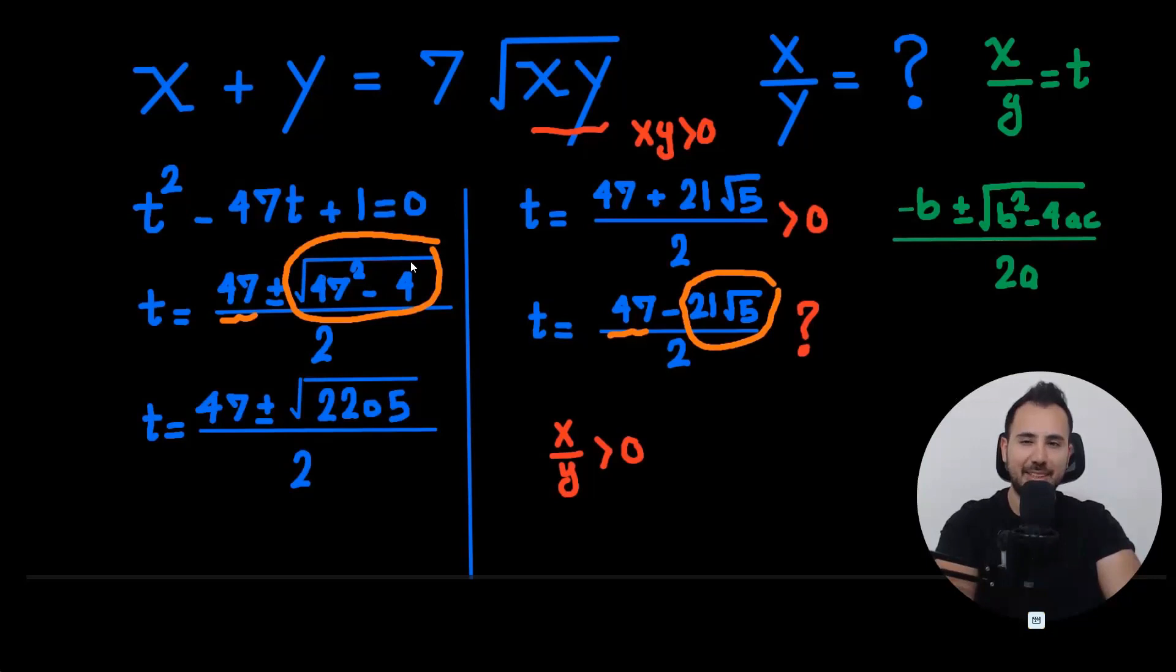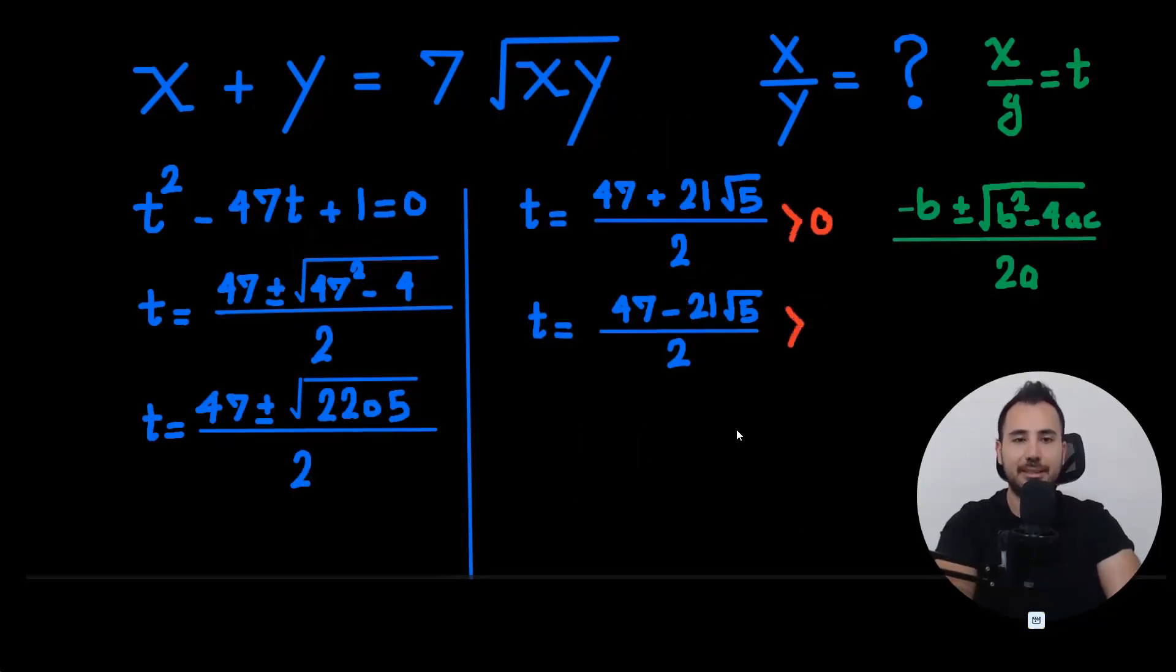So this is smaller than 47. So 47 minus something a little smaller is positive. So actually, both of these solutions are correct and the answer to the question.